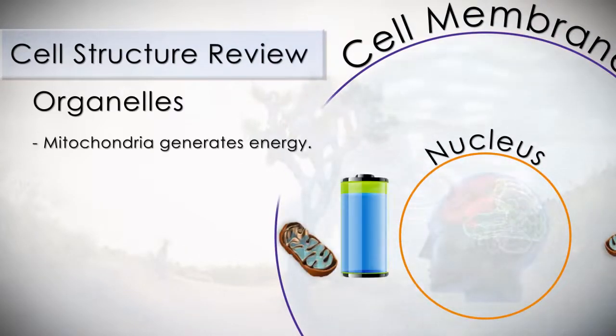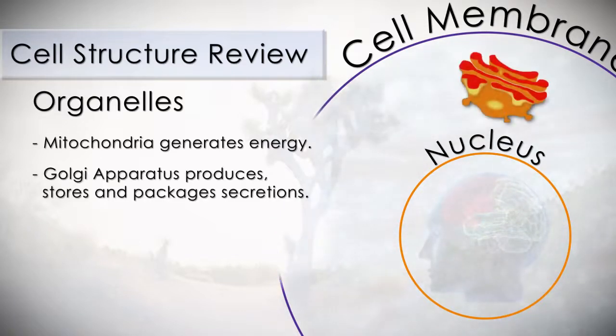The mitochondria generates energy for the cell. Golgi apparatus produces, stores, and packages secretions for discharge from the cell.